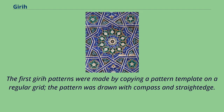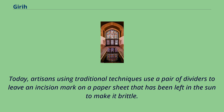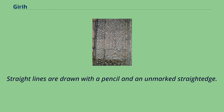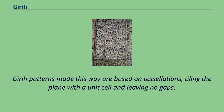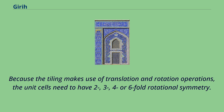The first girih patterns were made by copying a pattern template on a regular grid, drawn with compass and straight edge. Today, artisans using traditional techniques use a pair of dividers to leave an incision mark on a paper sheet that has been left in the sun to make it brittle, with straight lines drawn using a pencil and an unmarked straight edge. Girih patterns made this way are based on tessellations, tiling the plane with a unit cell leaving no gaps. Because the tiling makes use of translation and rotation operations, the unit cells need to have 2-, 3-, 4-, or 6-fold rotational symmetry.